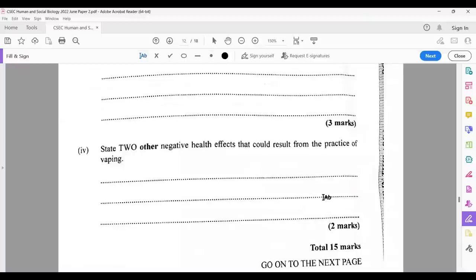State two other negative health effects that could result from the practice of vaping, other than dental. You should think cancer. You should think throat cancer. You should think lung cancer. Heart disease, infertility, even something as simple as asthma can be caused to amplify by vaping. And that would be 15 marks for this fourth question.